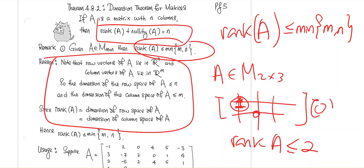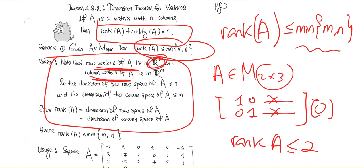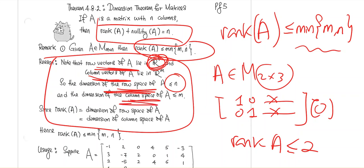The rank could be less than 2 — you could have just one pivot, or the matrix could be all zeros giving rank 0. The upper bound on rank is the minimum of m and n. A rigorous explanation: row vectors are in R^n so the row space has dimension at most n; column vectors are in R^m so the column space has dimension at most m. Since rank equals both, it must be at most min(m, n).